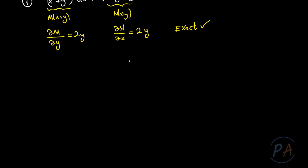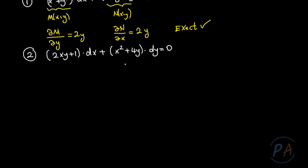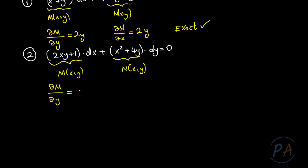One more example — let's check (2xy + 1) dx + (x² + 4y) dy = 0. We name the coefficient of dx as M(x, y) and the other as N(x, y). The partial derivative of M with respect to y is 2x, and the partial derivative of N with respect to x is also 2x. So this one is also exact.